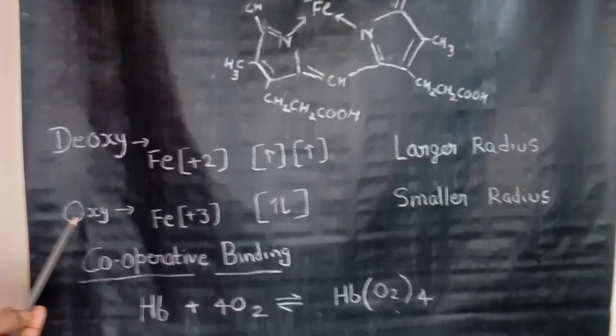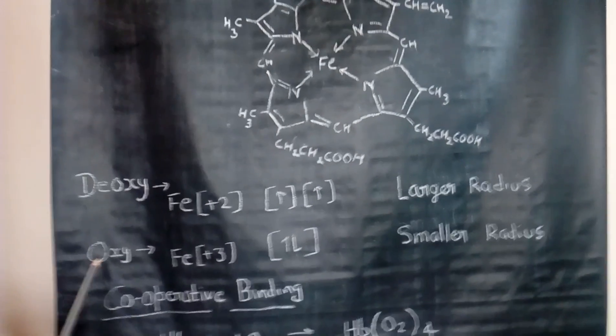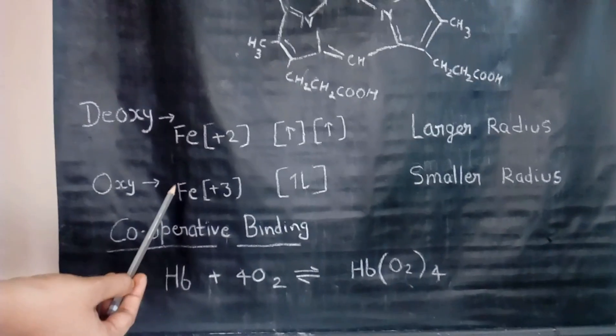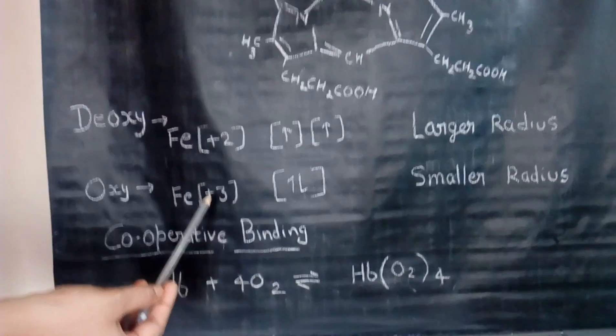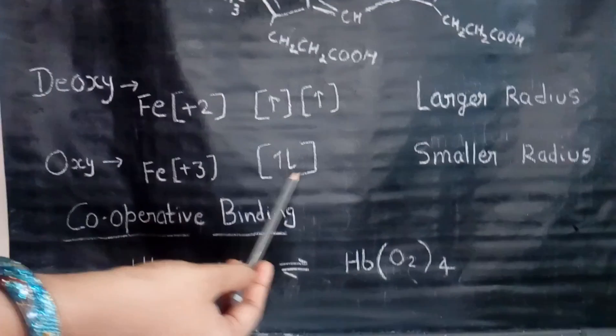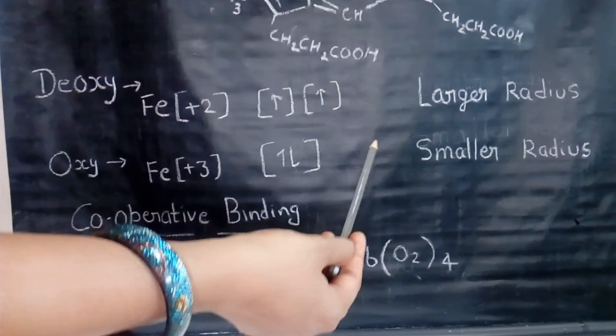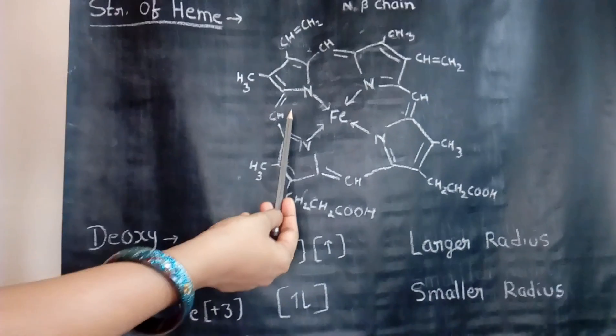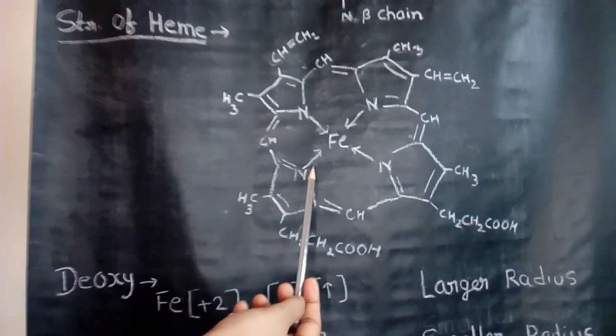When oxygen comes in contact with it, it forms oxyhemoglobin. In oxyhemoglobin, iron comes in +3 oxidation state. Plus-3 means the electrons get paired. The electrons get paired, so the radius becomes smaller and the iron comes in the hole and forms a planar structure.